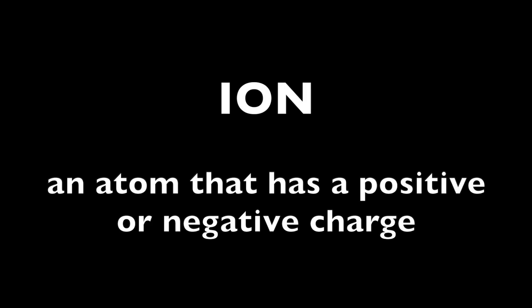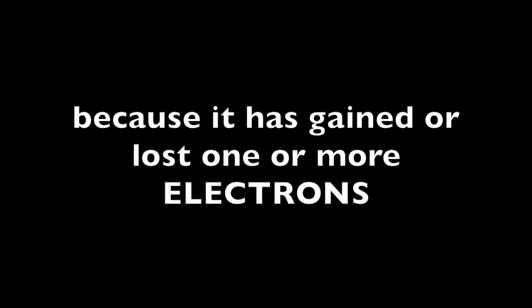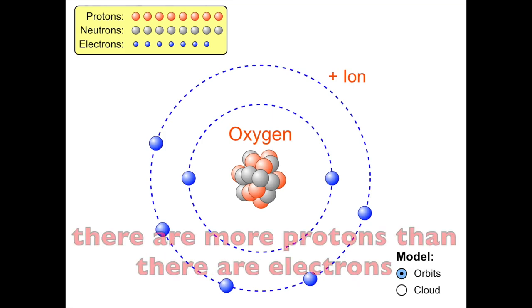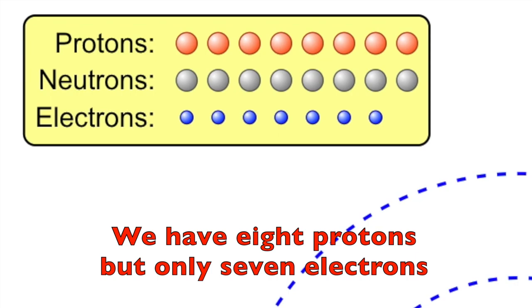An ion is an atom that has a positive or negative charge because it has gained or lost one or more electrons. In this example, there are more protons than there are electrons. We have eight protons but only seven electrons.